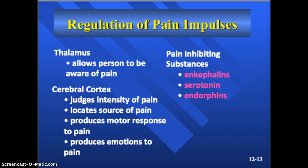There are a few ways to regulate pain. Your thalamus is what allows you to be aware of the pain — the impulse goes to the thalamus first, then to the cerebral cortex. The cerebral cortex judges the intensity of the pain, locates where it's coming from, produces your response to the pain, and generates emotions related to it. Pain-inhibiting substances include enkephalins and endorphins — both are released in response to extreme pain and act as natural pain control by inhibiting neurotransmitters, stopping those impulses from being fired. When serotonin is released, it stimulates other neurons to release enkephalins, promoting more pain inhibition.